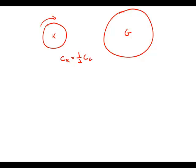Well, circumference, of course, is just 2πR. So 2πR of K equals one-half of 2πR of G.